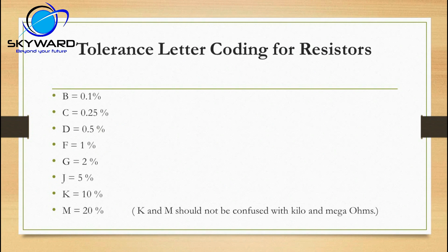Now we look at tolerance letter coding of resistors. If a letter is written on a resistor, what is the meaning of that letter? B means 0.1% tolerance. Tolerance means it can tolerate its value within that percentage — for example, if the value is 10k and G is written, it can vary 2% up or down. K means 10%, M is 20%, J means 5%.